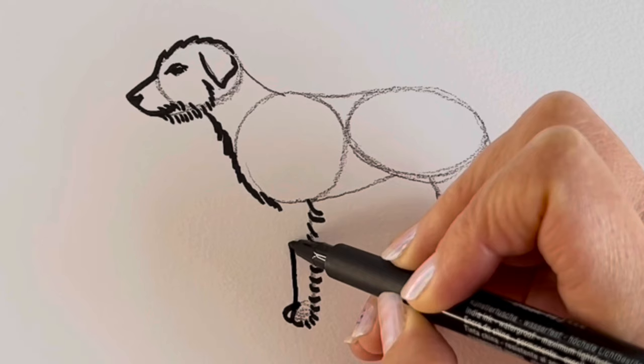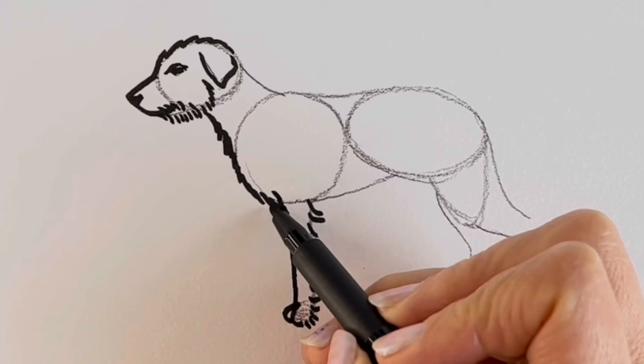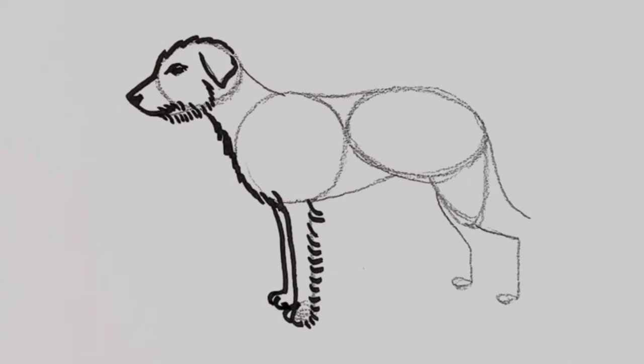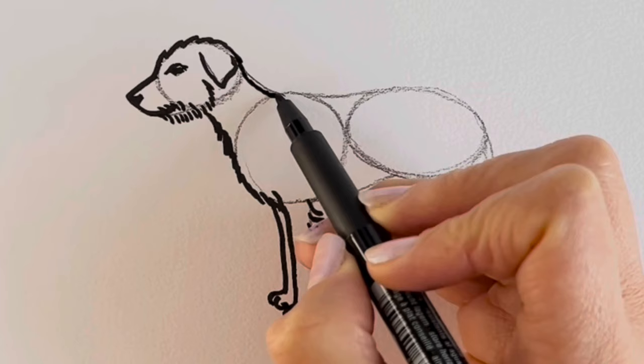There we go. Now for the front of this leg which comes up like so. Just like that. We're then going to put in the other front leg. So this one's just peeking out. We don't see much of it. This one has the paw slightly higher. Just like that. Easy, wasn't it?